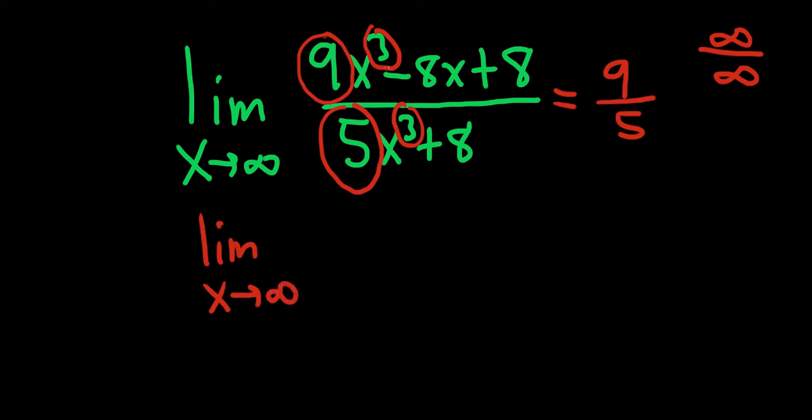So taking the derivative in the numerator, we'll get 27x squared. And the derivative of minus 8x is minus 8. And the derivative of 8 is 0. Over, taking the derivative on the bottom, that's going to give us 15x squared. And the derivative of 8 is 0.